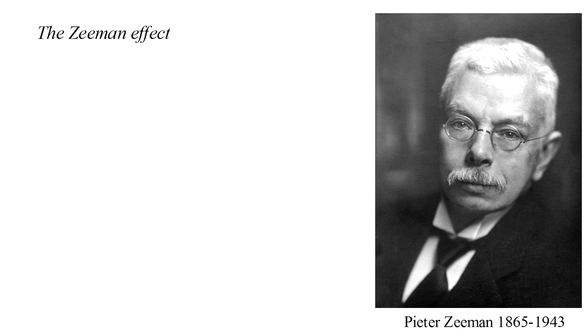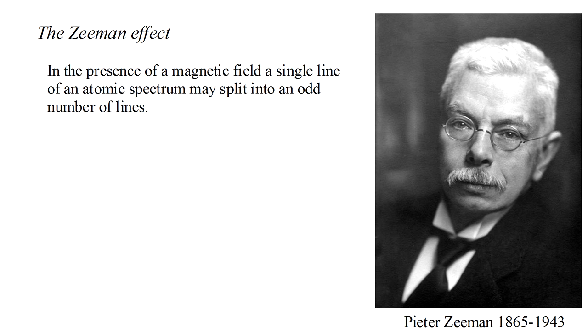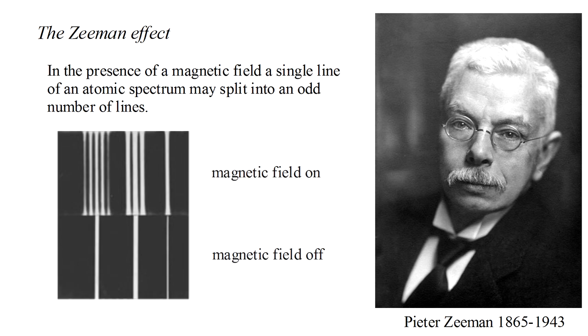Even before the development of quantum mechanics, Peter Zeeman had won one of the first Nobel Prizes in physics for discovering the effect later named after him. Zeeman found that in the presence of a magnetic field, a single line of an atomic spectrum may split into an odd number of lines. Here we see an example.